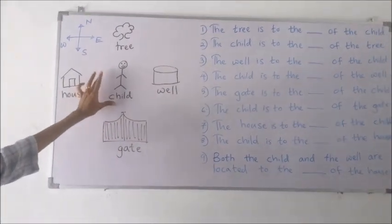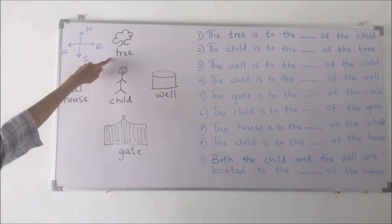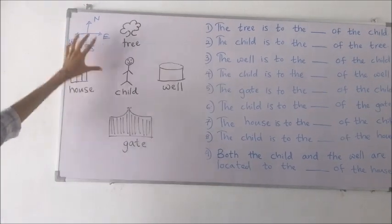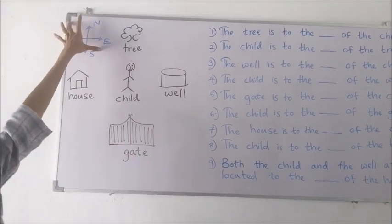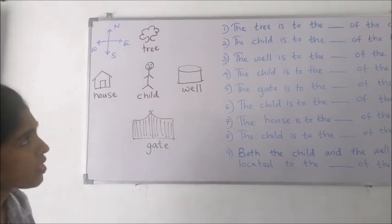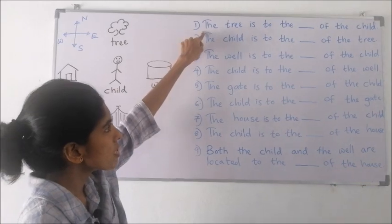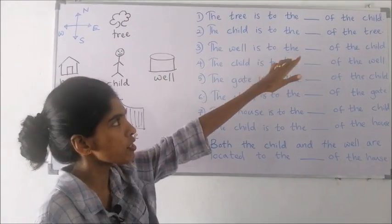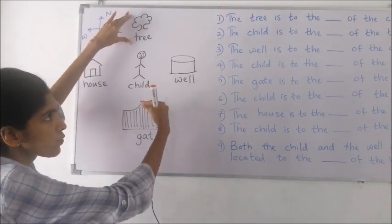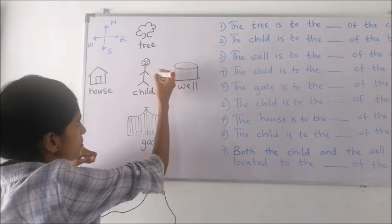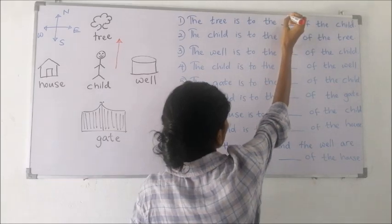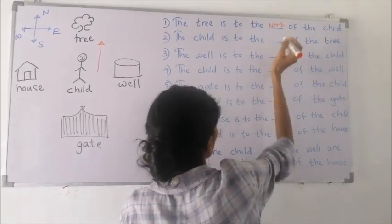In this figure, in the middle a child is there. Up, a tree; gate, house, and well are there in the four main directions. The four main directions are also mentioned here to help us fill the spaces. The tree is to the north of the child.